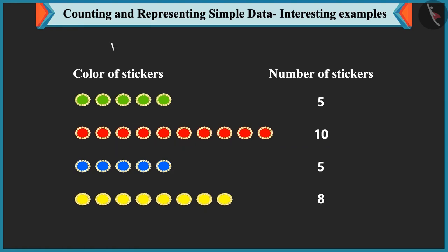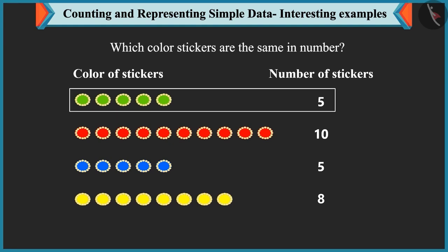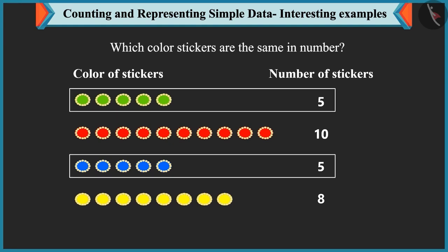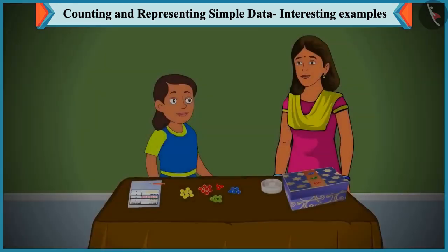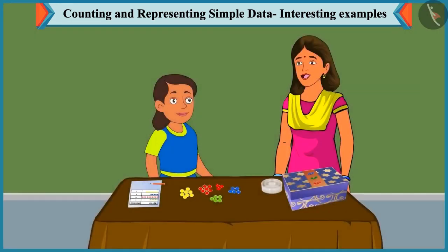Mummy asks which color stickers are the same in number. Bubbly answers that green and blue stickers both number 5, so they are equal in number. Mummy says well done.